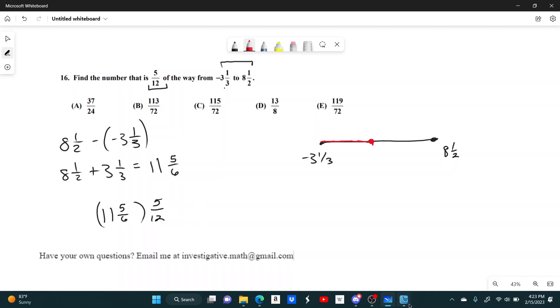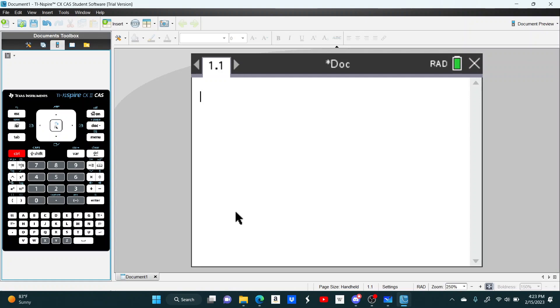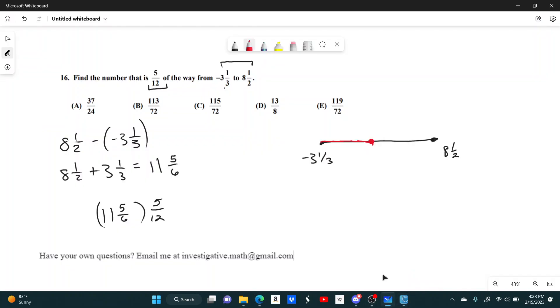So 11 and 5 sixths times 5 twelfths gives us a distance of 355 over 72. So this distance right here is 355 over 72.